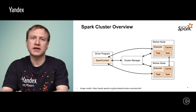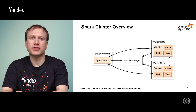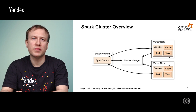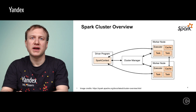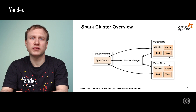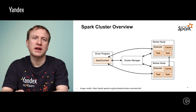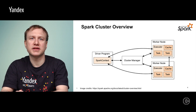Spark Context then starts executor processes on those worker nodes. Executors are processes that execute smaller units of work called tasks, needed to be performed by the driver program. The driver program creates a directed acyclic graph of computations which executes lazily — only when the resulting data is needed to save or display are the necessary steps of the DAG executed.